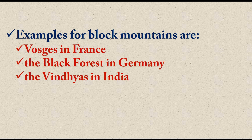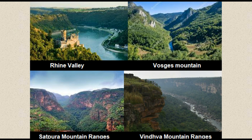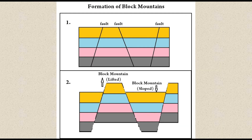Here are pictures showing block mountains in different parts of the world — in all pictures you can see a valley in the middle and block mountains on either side. To draw the diagram of block mountain and rift valley formation from the textbook: first, draw a piece of crust with different rock layers, then show fault line formations on it.